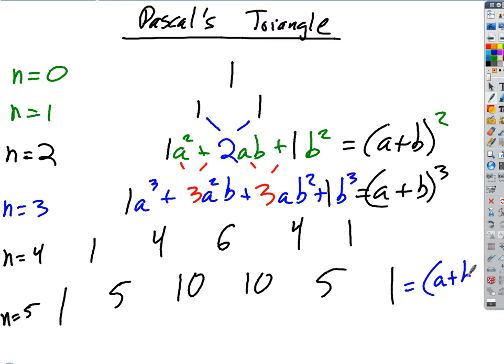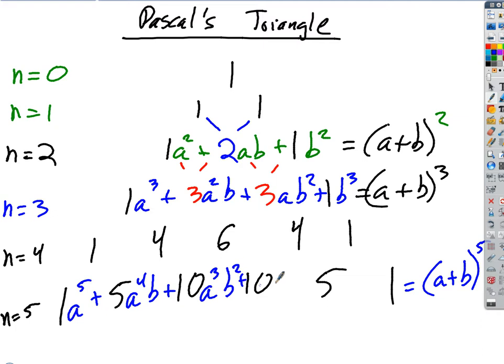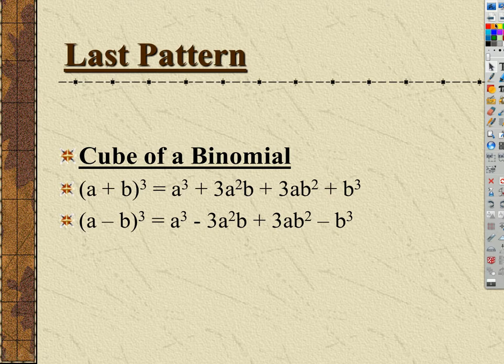For a plus b to the 5th, you use row 5 from Pascal's Triangle — coefficients 1, 5, 10, 10, 5, 1. It gives: a to the 5th, plus 5a to the 4th b, plus 10a cubed b squared, plus 10a squared b cubed, plus 5a to the 1 b to the 4th, plus b to the 5th. This is so useful — you could do bigger problems using that little trick. Eventually you're going to get them, so it's nice to know.